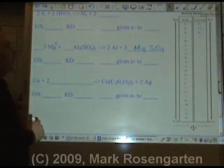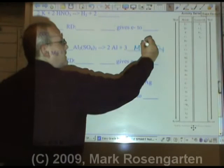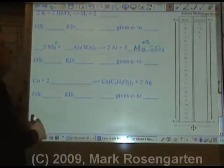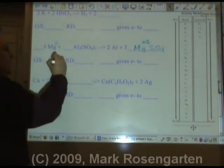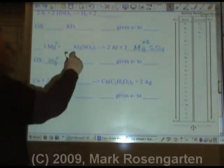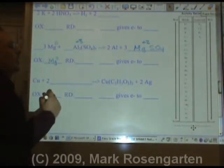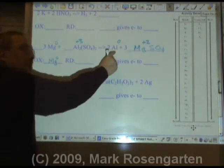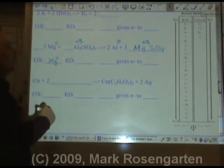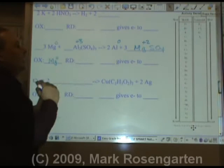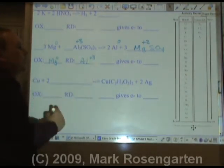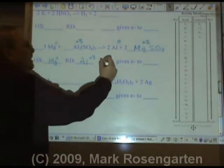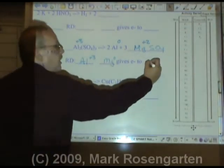Magnesium starts off as zero. According to the periodic table, its ion charge is plus two. Because it became more positive by losing two electrons, it's oxidized. Aluminum started as plus three. It ends as zero because it's not in a compound, so it has no charge. It gained three electrons to do this. Therefore, aluminum plus three is reduced. Which means the magnesium will give electrons to aluminum.